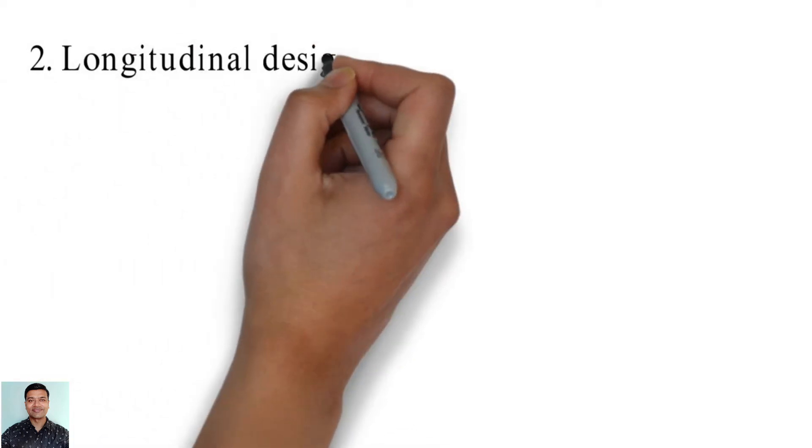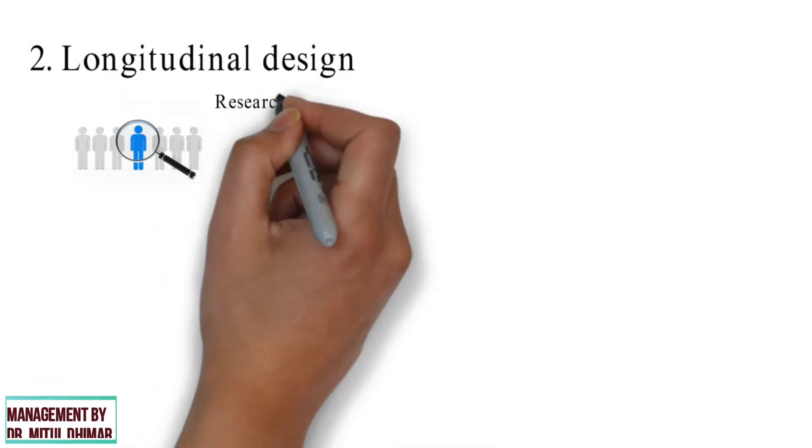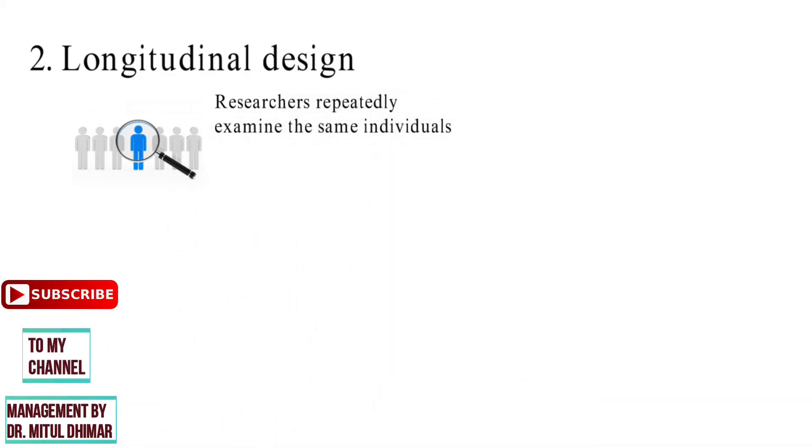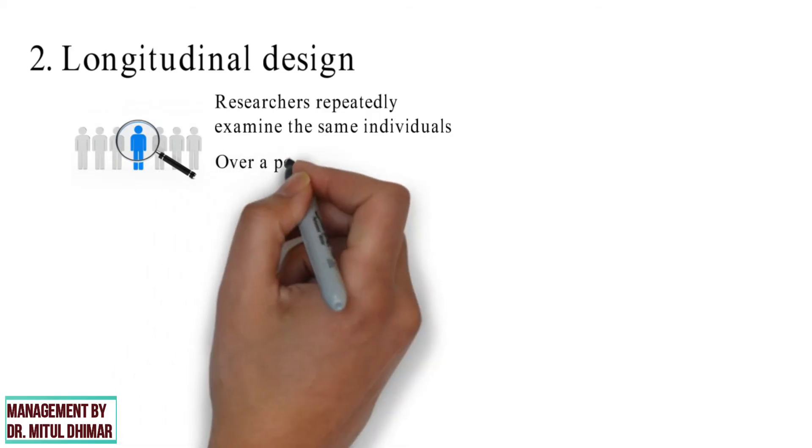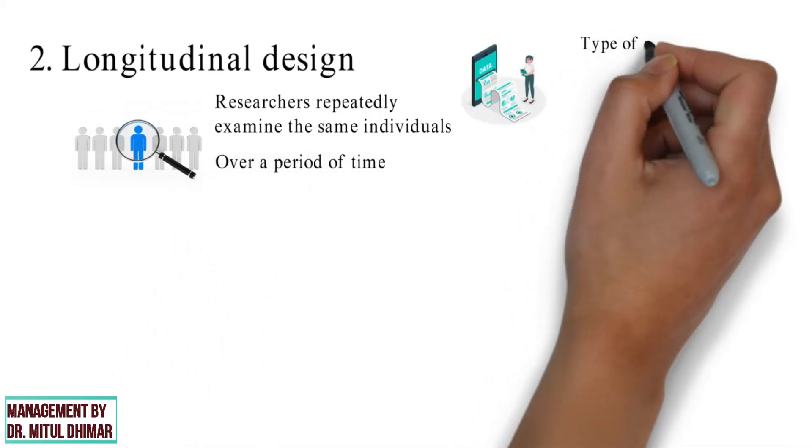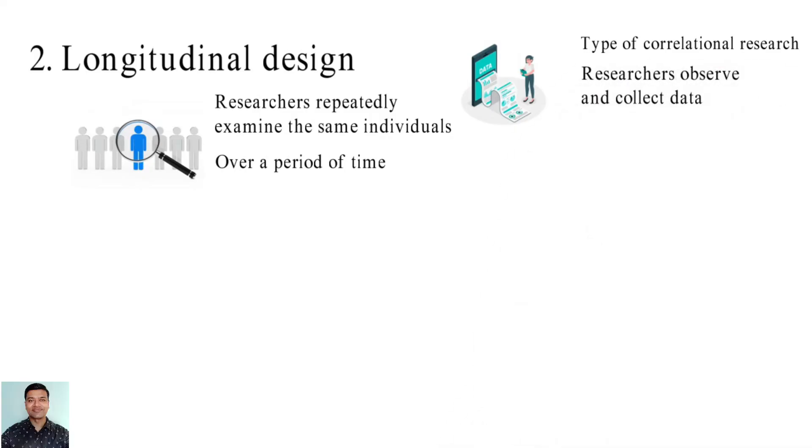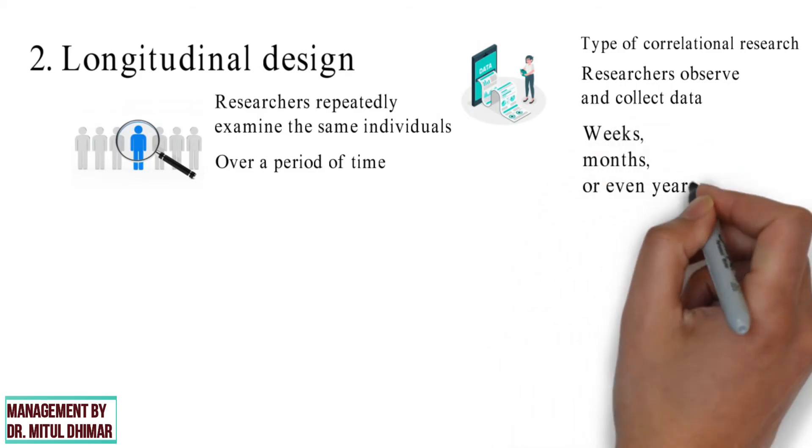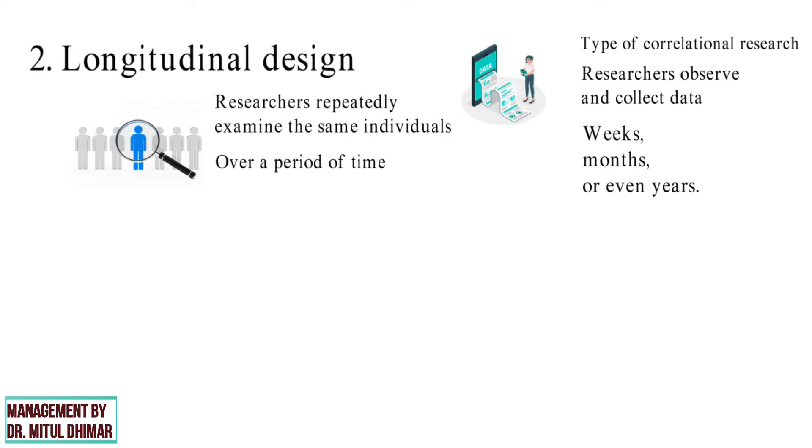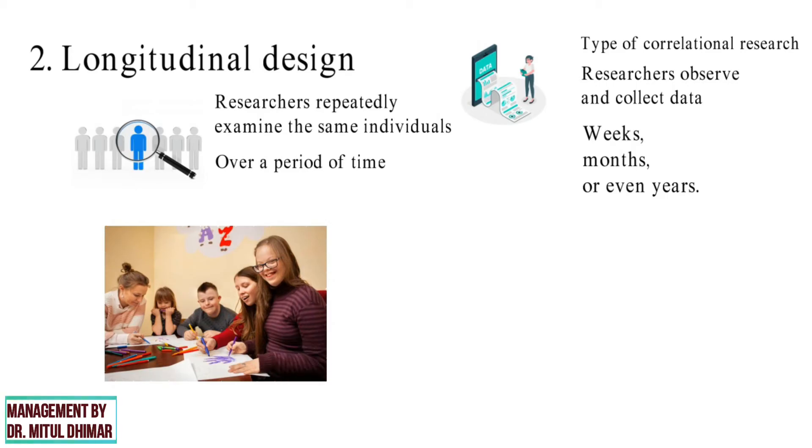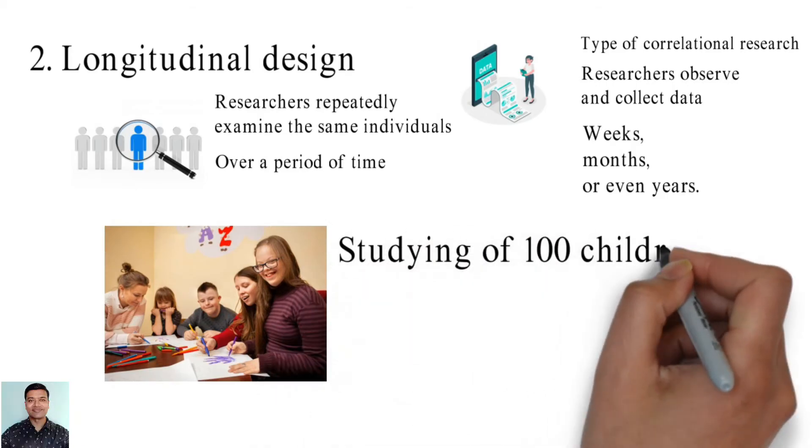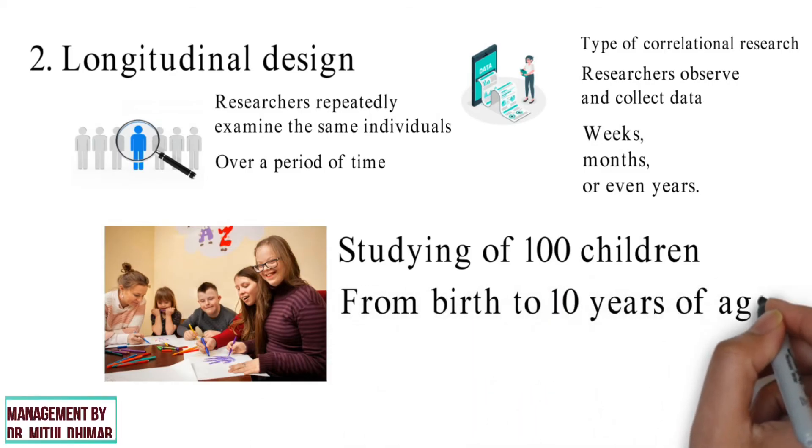Number 2. Longitudinal design. In a longitudinal study, researchers repeatedly examine the same individuals for any changes that may occur over a period of time. Longitudinal studies are a type of correlational research in which researchers observe and collect data on a number of variables without trying to influence them. This type of study can take place over a period of weeks, months or even years. In some cases, longitudinal studies can last several decades. For example, a longitudinal study of children with Down syndrome could involve study of 100 children with this condition from birth to 10 years of age.